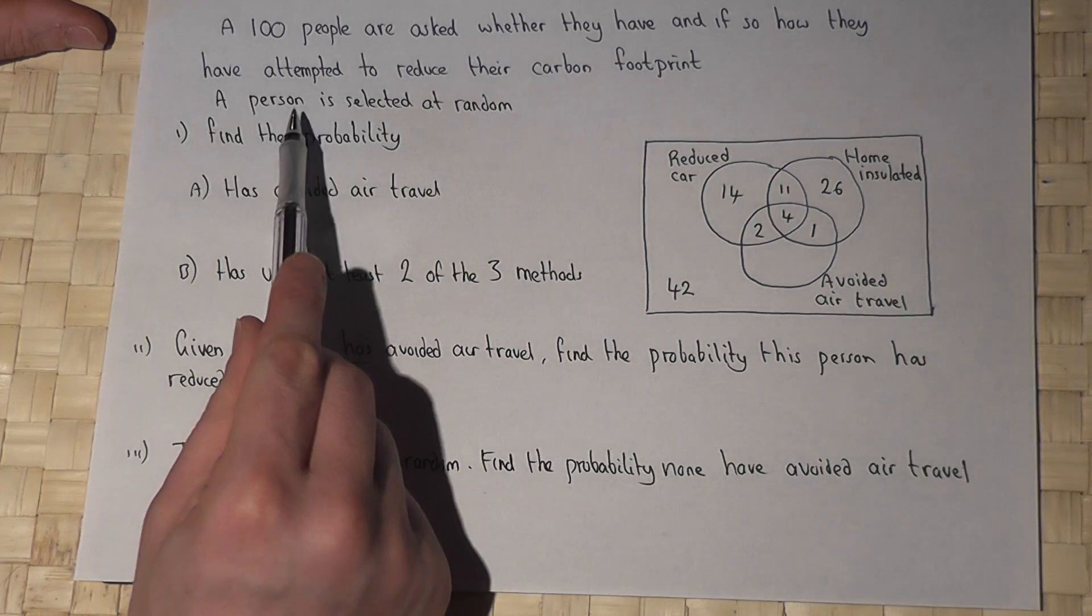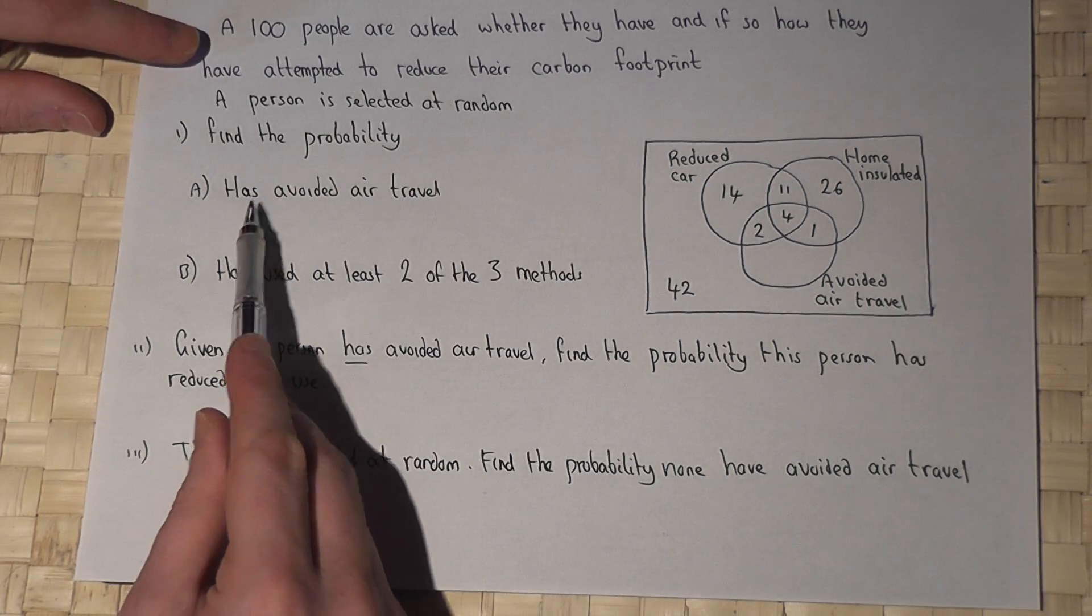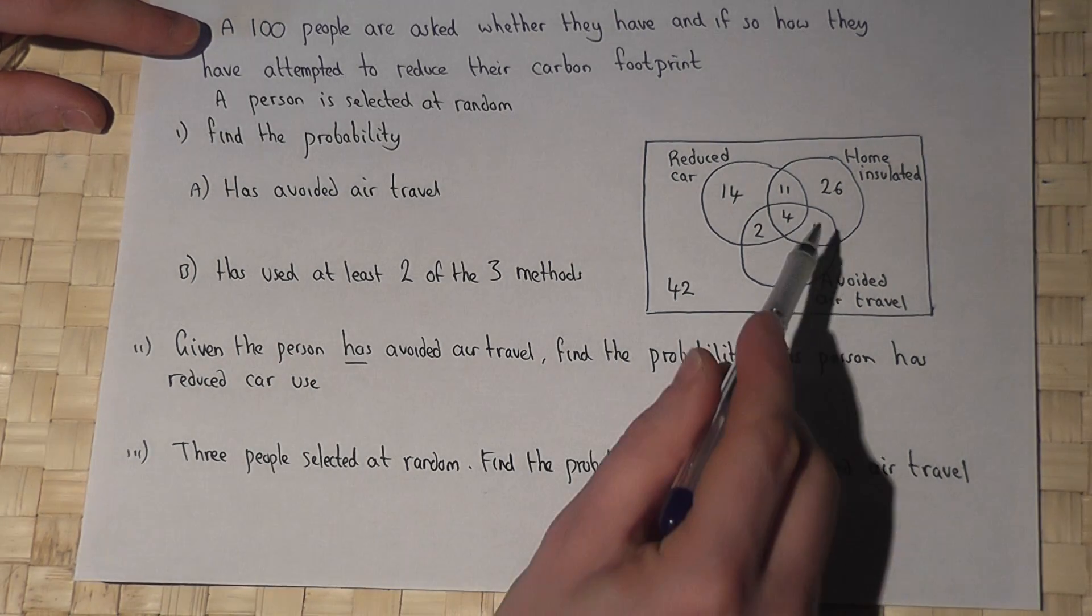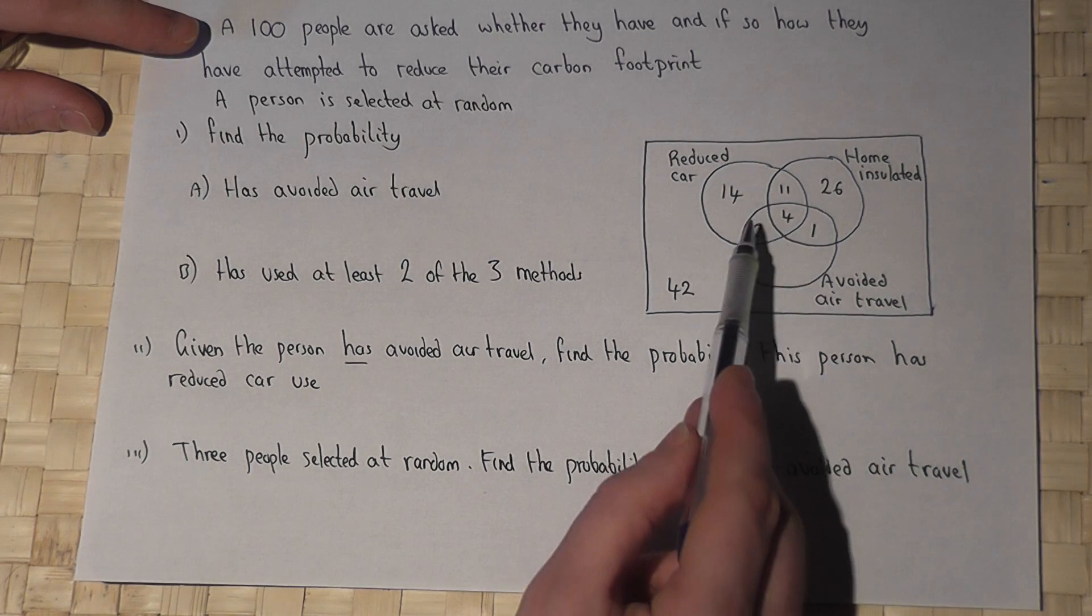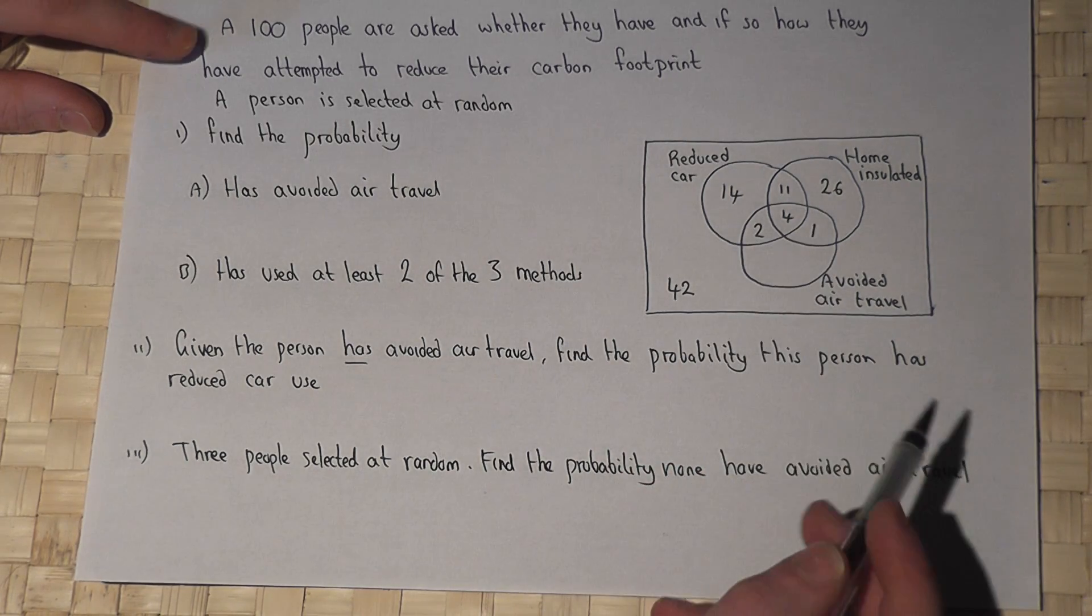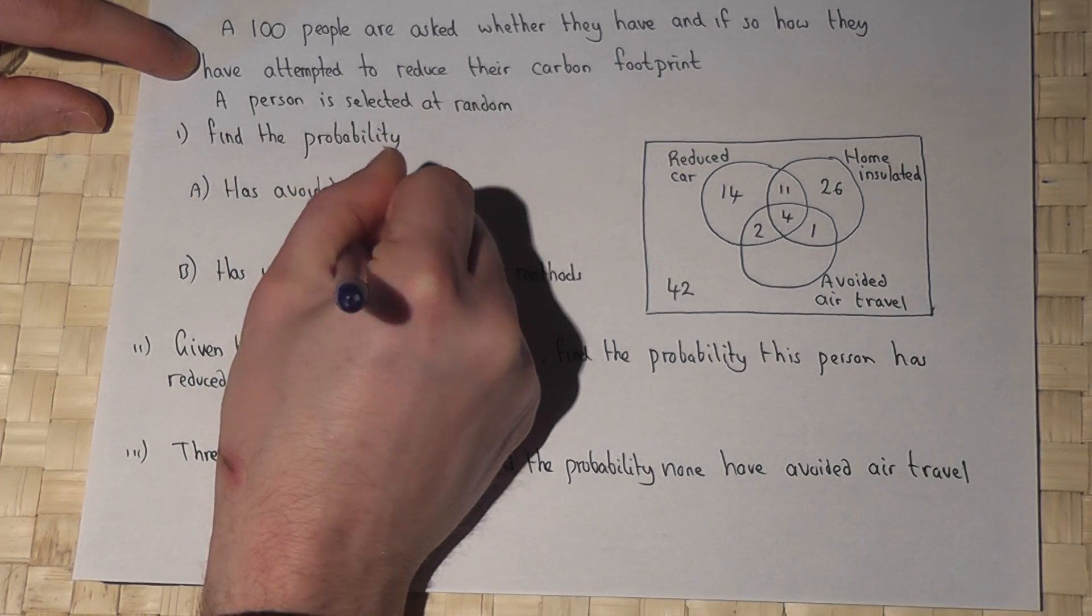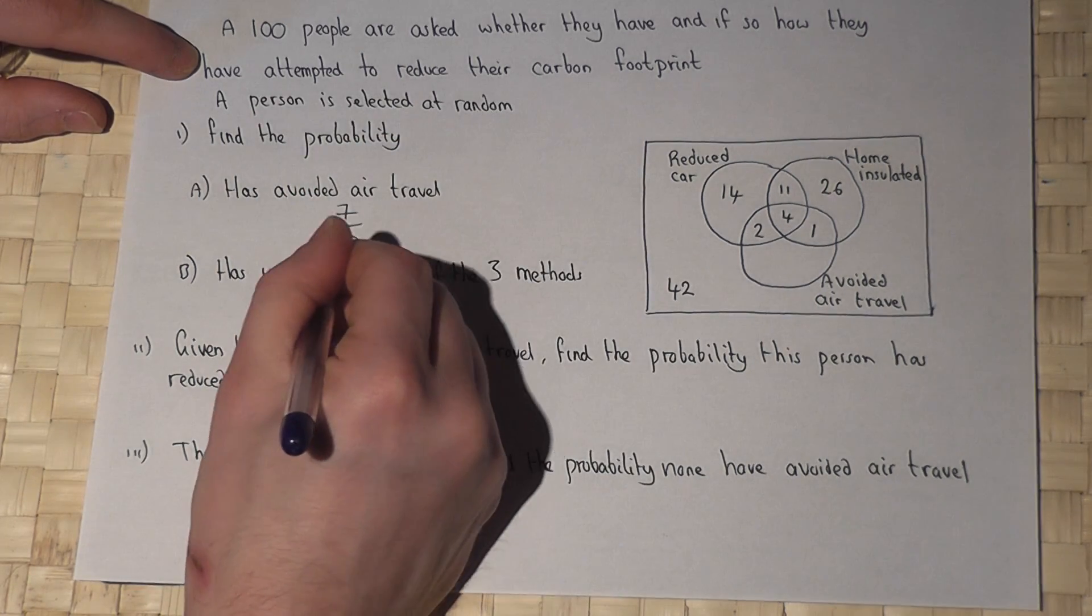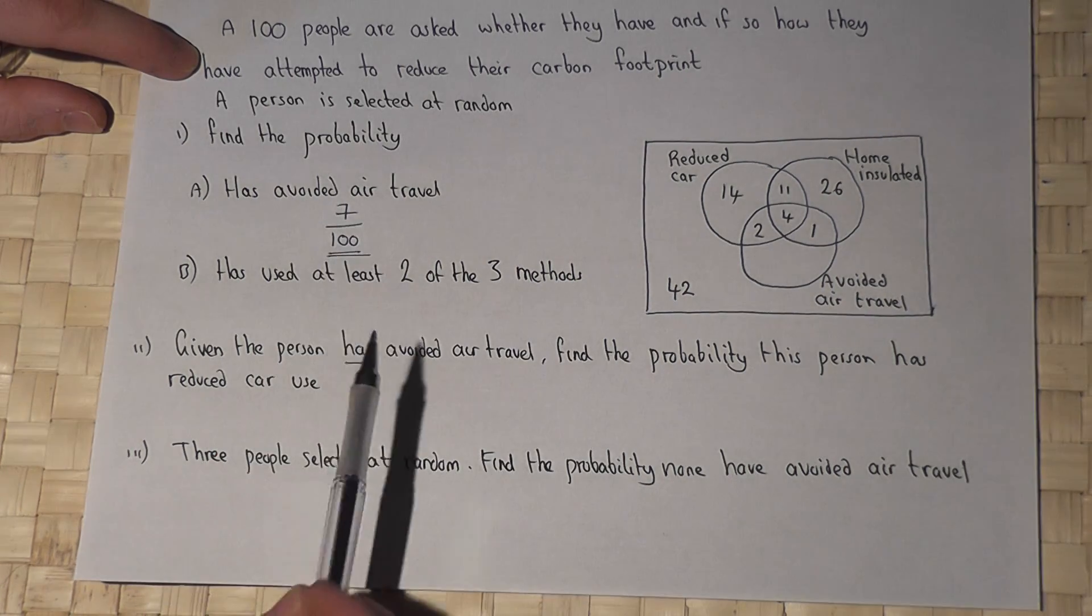Now then, one person is selected at random and the chance that this person has avoided air travel. This circle is to avoid air travel. Two plus four plus one is seven, so seven out of a hundred is therefore the answer to the chance that this person has avoided air travel.